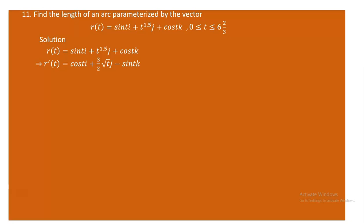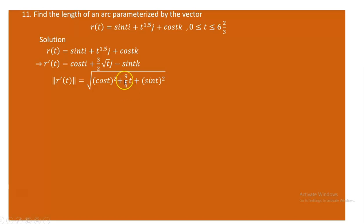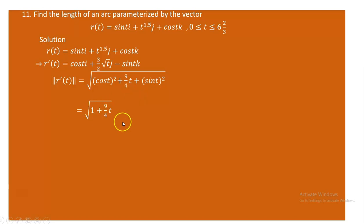The derivative r'(t) is: the derivative of sin(t) is cos(t); bring the exponent 3/2 in front and subtract one from the exponent, giving (3/2)t^(1/2) = (3/2)√t for the j-component; and the derivative of cos(t) is -sin(t) for the k-component. The norm of r'(t) is the square root of cos²(t) + (3/2 · √t)² + sin²(t). The square of (3/2)√t is 9t/4. Since cos²(t) + sin²(t) = 1, the norm simplifies to √(1 + 9t/4).